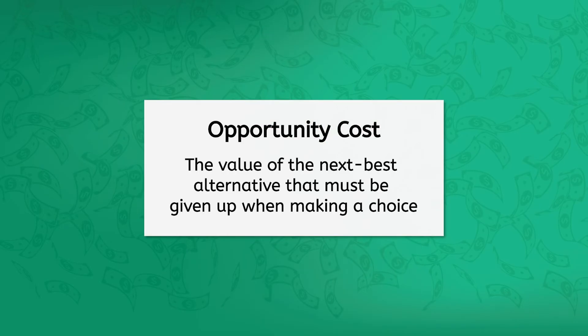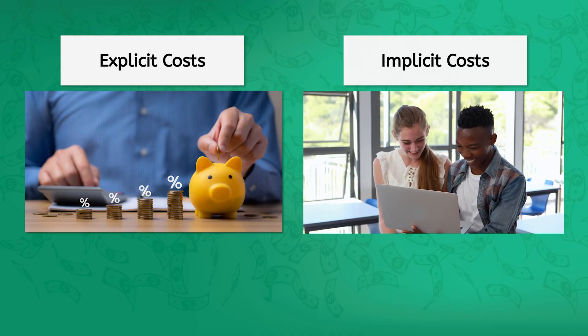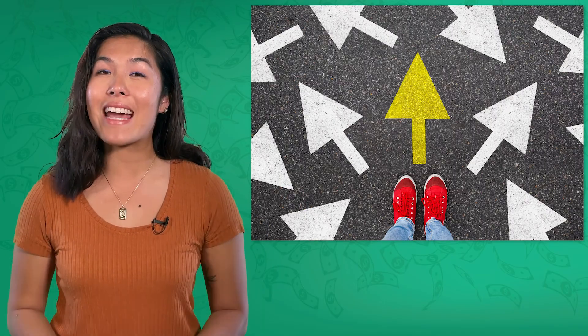Let's recap what we've learned. Opportunity cost is the value of the next best alternative that must be given up when making a choice. You can calculate it by looking at the explicit and implicit costs of that trade-off. Remember, some of these costs are hard to put a dollar value on, so you have to look at the big picture and consider what matters most to you. Every choice has trade-offs, and understanding opportunity cost can help you choose the path that leads to the most happiness and success. Next time, we'll look at how to use opportunity cost in a cost-benefit analysis to really up your decision-making game. Until then, this is Bea, reminding you to keep investing in your future, one lesson at a time. See you next time!